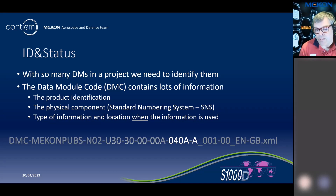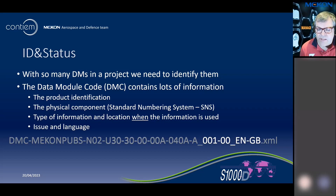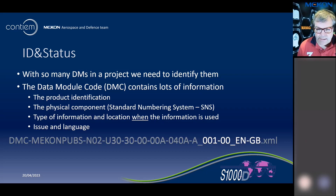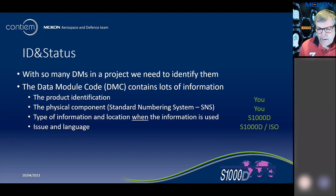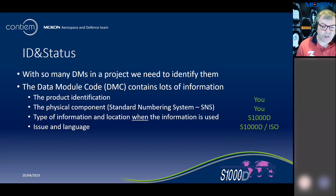Zero four zero is general information, so this will be a general description about whatever the SNS is pointing to. The 001 is the issue number of the data module. The dash double zero is the in-work number — that tells us whether it's going through editing or whether it's been finalized and issued. And then the last bit, ENGB, is the language. EN is English language; GB tells me I'm using the British English dictionaries and dialect. If it were in the US, that would be EN-US.